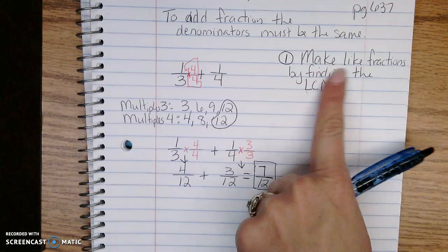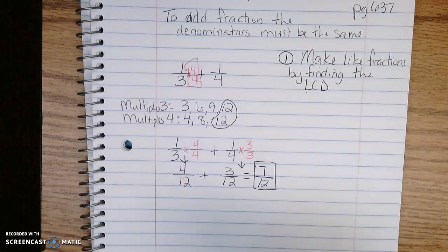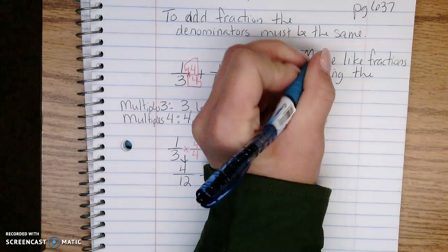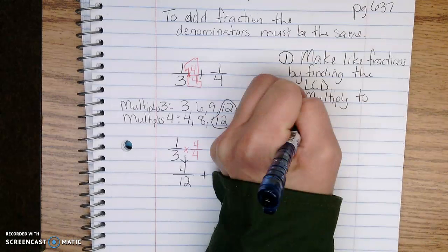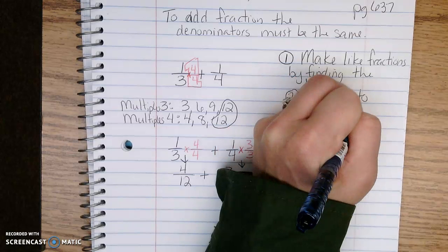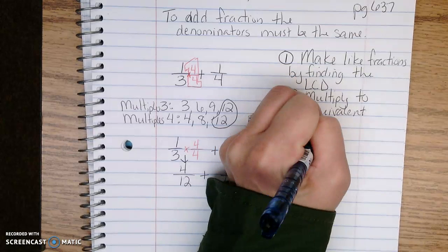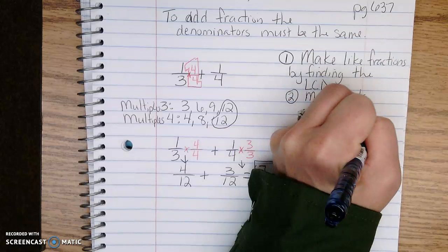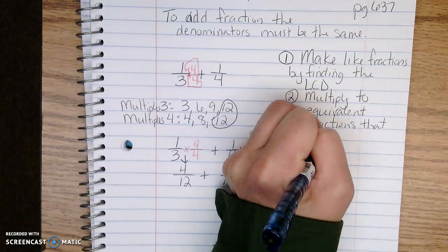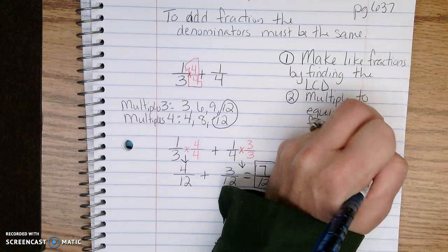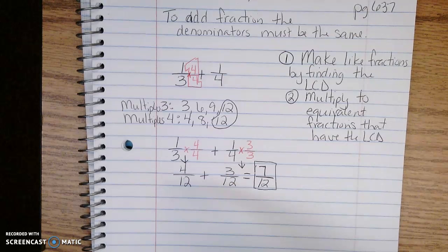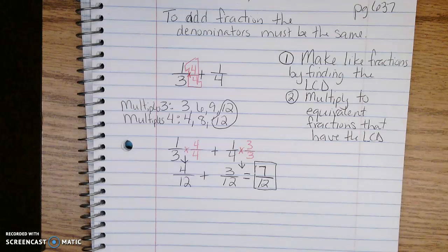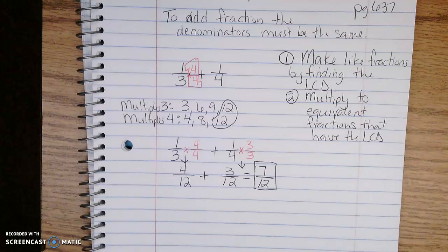Step 1 was to make like fractions by finding the LCD. Step 2 would be to multiply to make equivalent fractions that have the LCD. Sometimes I have to multiply both fractions like I did in this problem, and sometimes I only need to change one of the fractions because the other one has the LCD already.